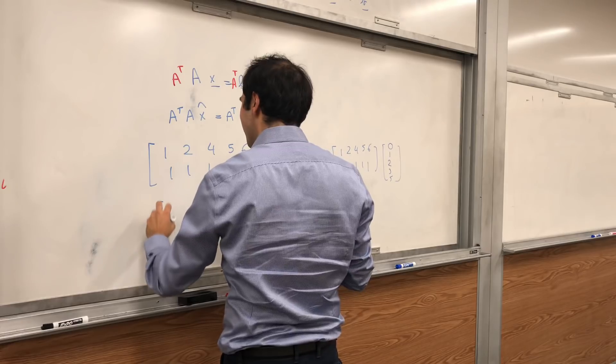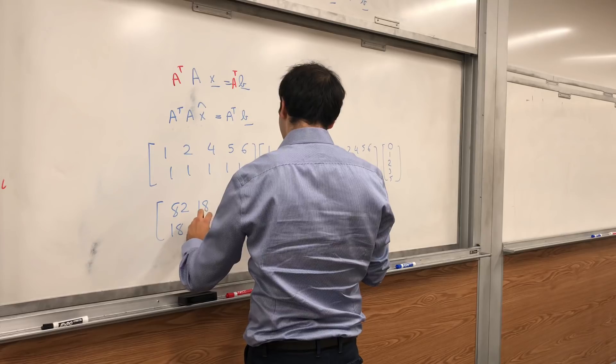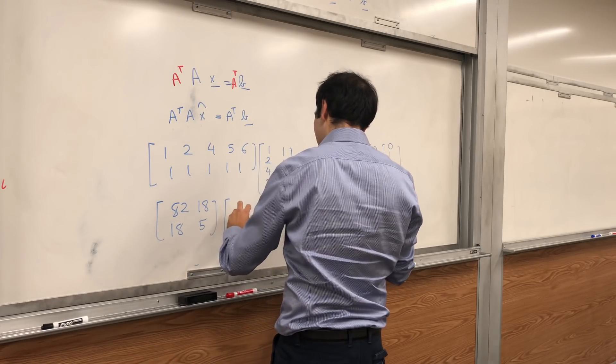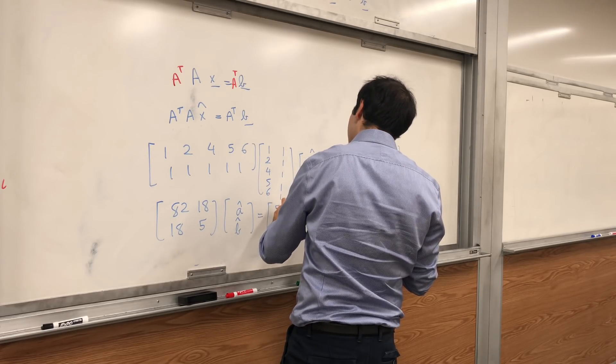And if you do that, you get, I apologize, some ugly system: [82,18; 18,5] times [A hat; B hat] equals [55; 11].